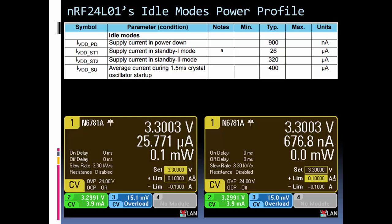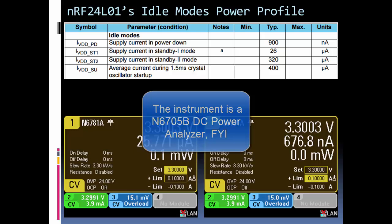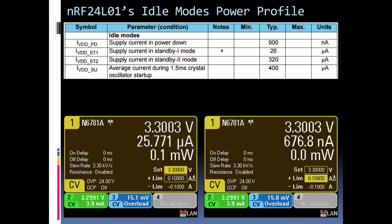Here we're looking at the idle mode. On top I have a clip from the data sheet showing typical values of current draw while in idle mode, and then using a very accurate instrument to measure, first to supply the power to the nRF24 module and also measure the voltage and current. I have the voltage set for 3.3 volts and in the first picture on the left I have the nRF24 in idle mode.